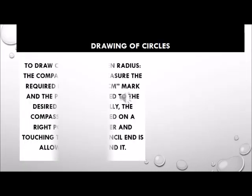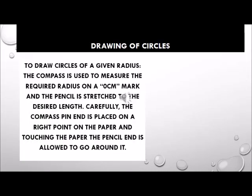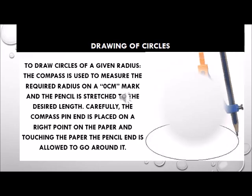Drawing of circles. To draw circles of a given radius, the compass is used to measure the required radius from the 0 cm mark and the pencil is stretched to the desired length. Carefully, the compass pin end is placed on the right point on the paper, touching the paper, and the pencil end is allowed to go around it.